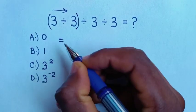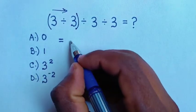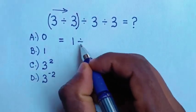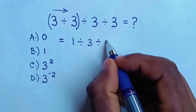Then it will be equal to 3 divided by 3 is 1, then divided by 3, then divided by 3.